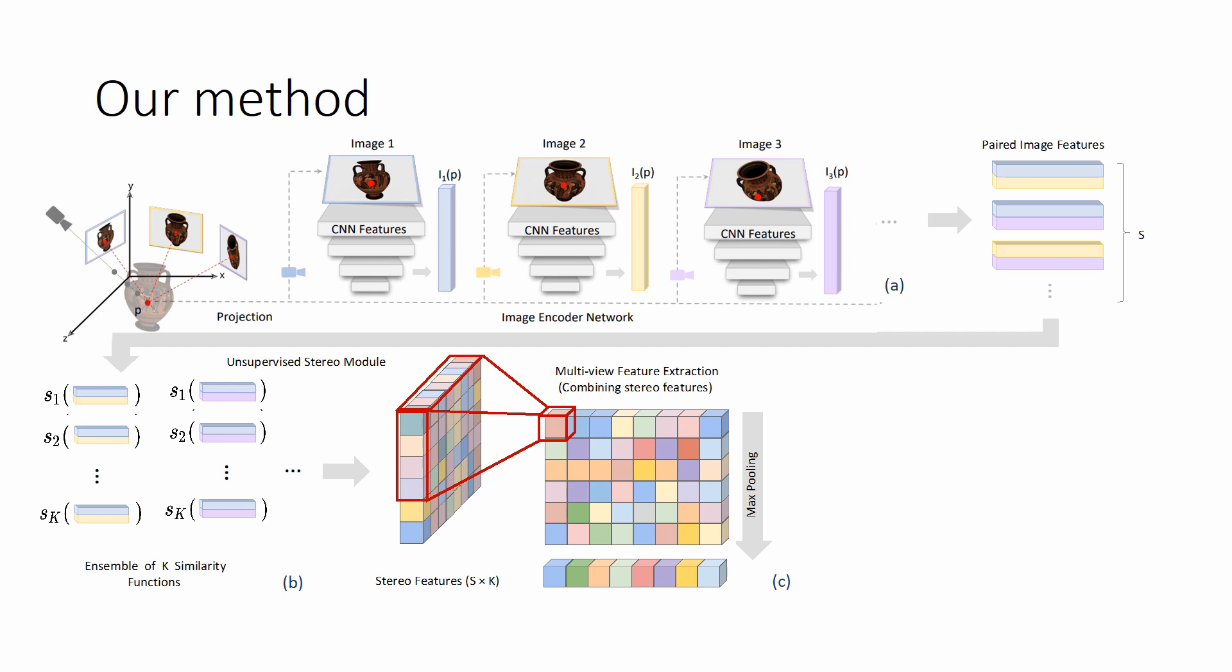Next, we encode all information into a single vector of fixed length using max pooling. Finally, the encoding is decoded into color and density by a fully connected network.